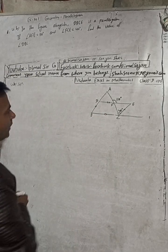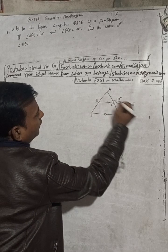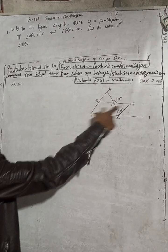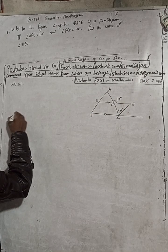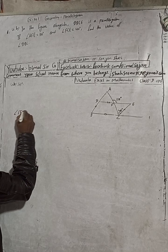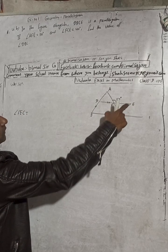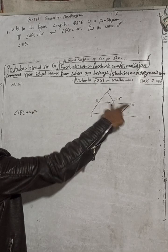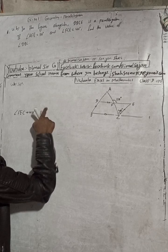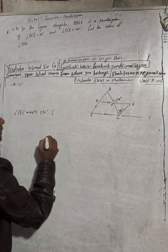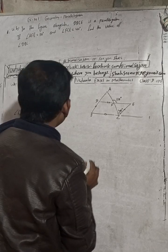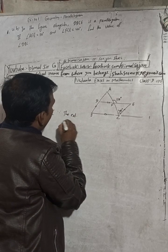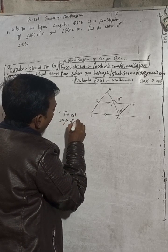Can we write this angle plus this angle equals 110 degrees? So this angle name I write as angle FEC, angle FEC plus 40 degrees. These are the exterior angle.